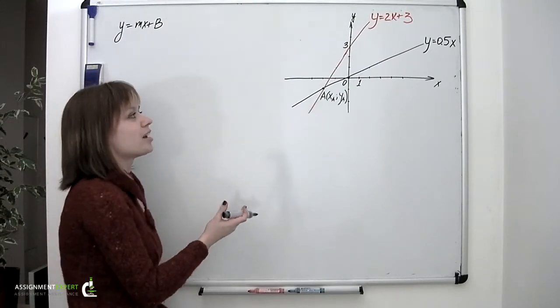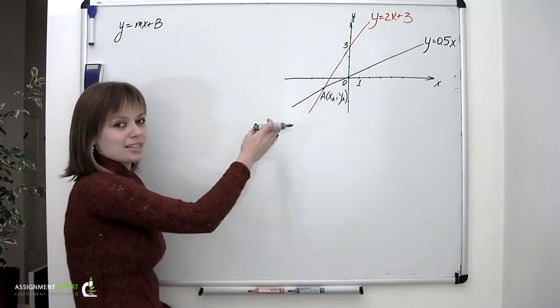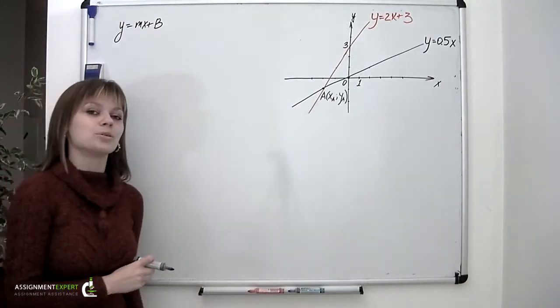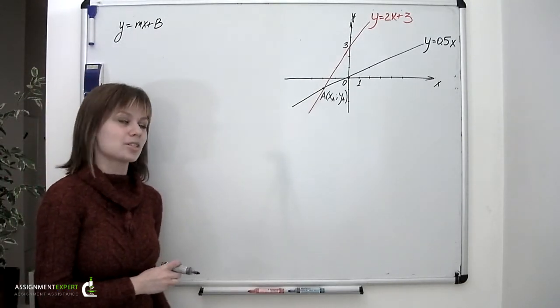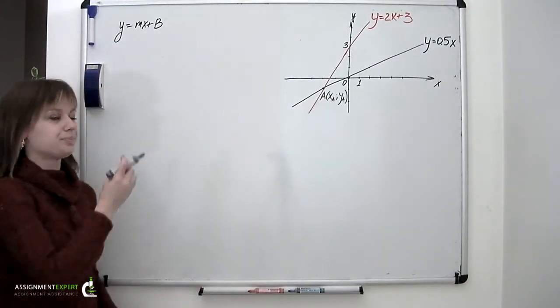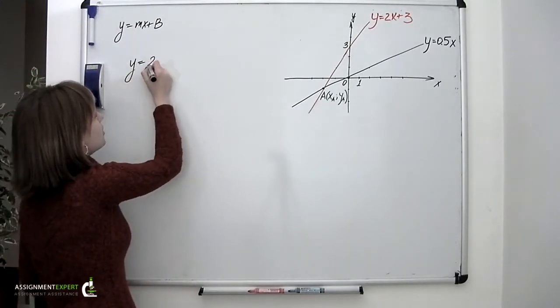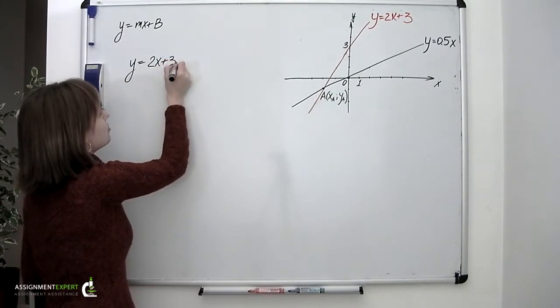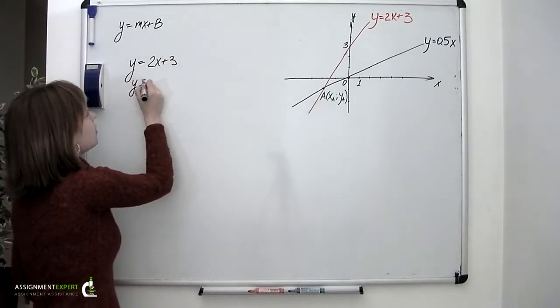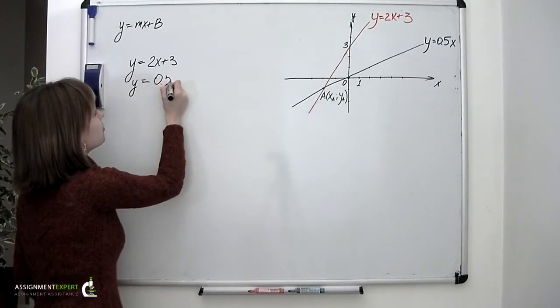And this is what is called to solve a system of equations looking like this. So let's form this system: y equals 2x plus 3 and y equals 0.5x.